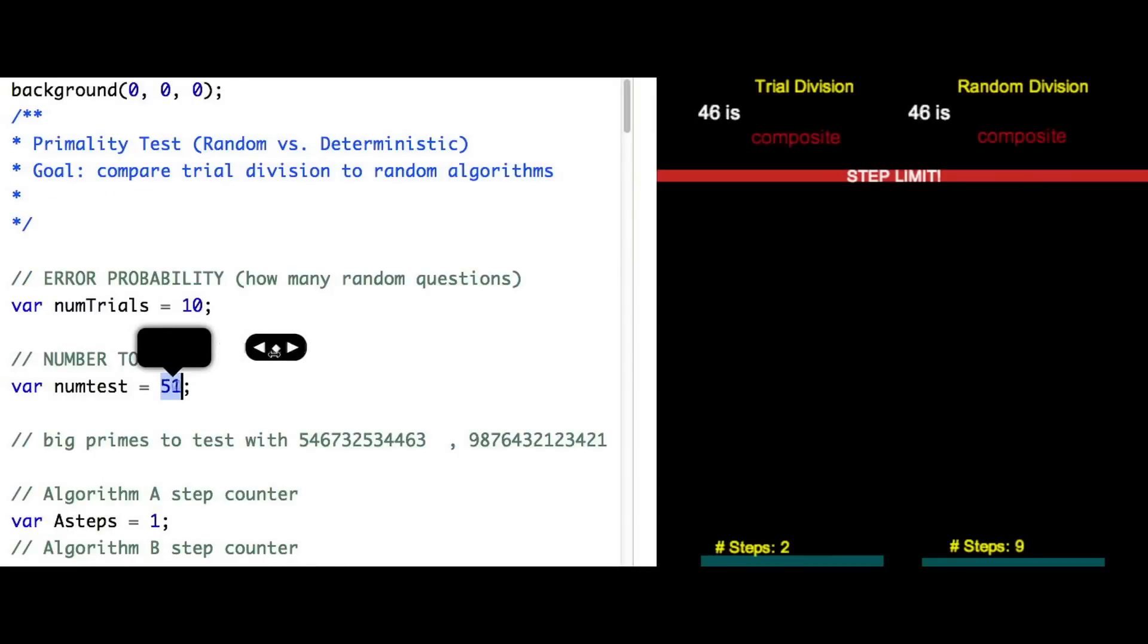So to begin, notice the variable number of trials. This is the number of random guesses. So we'll start at something small such as three.